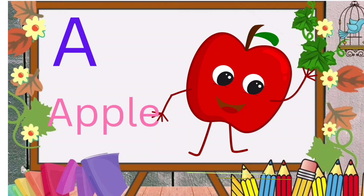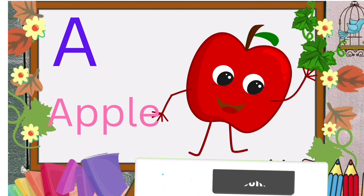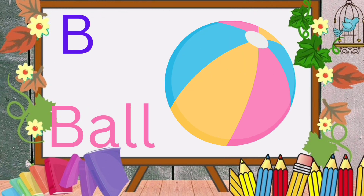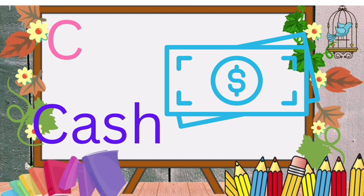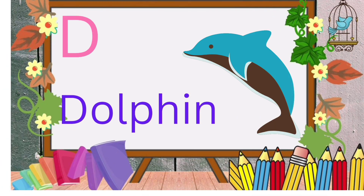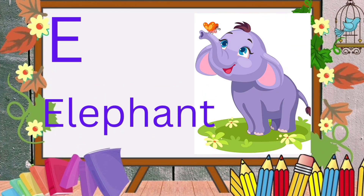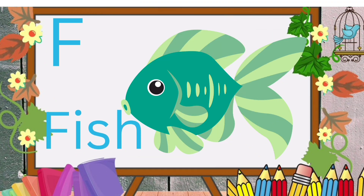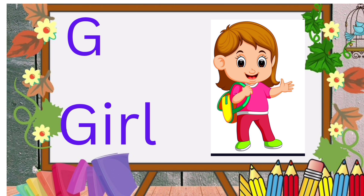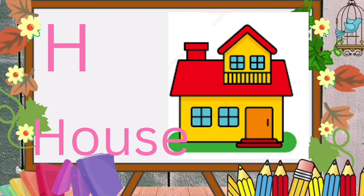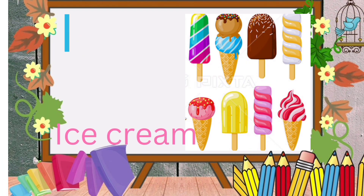A for apple. B for ball. C for cash. D for dolphin. E for elephant. F for fish. G for girl. H for house.